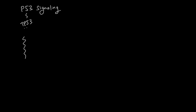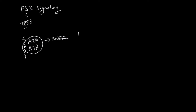When DNA of a cell gets damaged, proteins like ATM and ATR sense the damage and activate another protein called CHK2. A cell also constantly makes P53, but another protein called MDM2 also constantly gets rid of P53, so the amount of P53 is not going to accumulate in a cell.